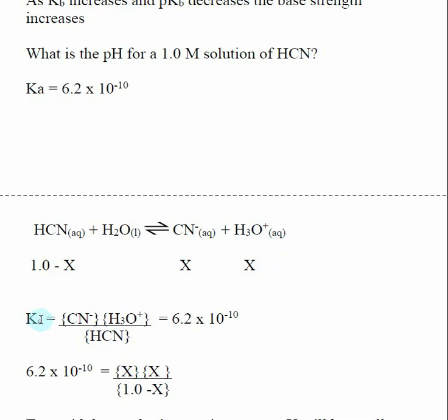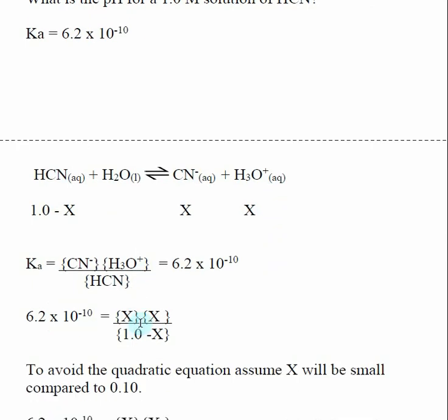We then come up with the equilibrium expression, which is products divided by reactants. And remember, water doesn't make it into the equilibrium expression. And remember, our equilibrium expression is equal to Ka, which is given. Then what we do is we take these theoretical values and plug them into our equilibrium expression. So X for CN minus, X for H3O plus, and 1 minus X for HCN. And that's going to be equal to our Ka.